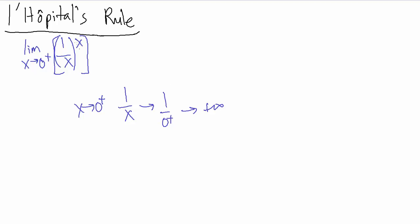In the exponent, x is going to 0 from the positive side. So this whole thing is essentially positive infinity raised to the 0. That's one of our indeterminate forms, which makes us sad — but because it's an indeterminate form, that actually makes us happy, since we can use L'Hôpital's rule.